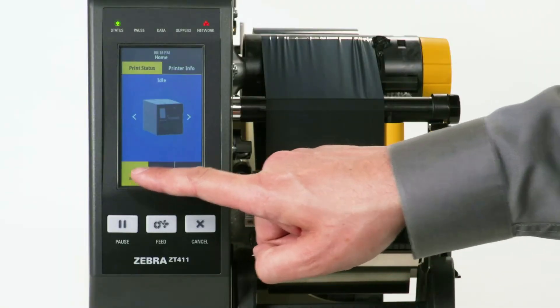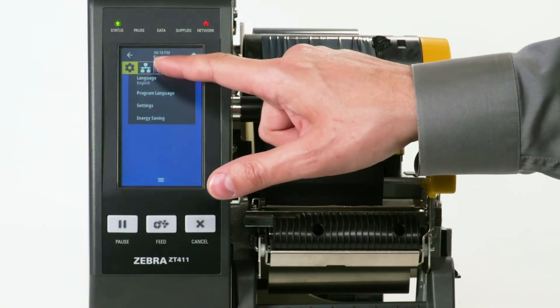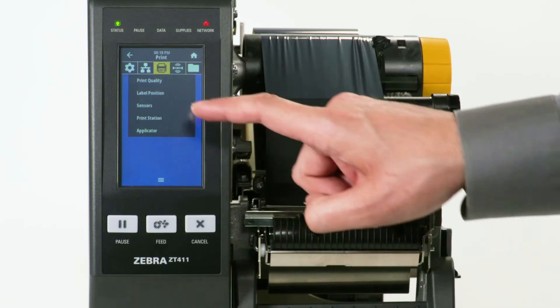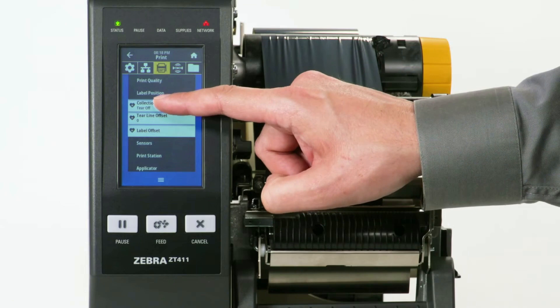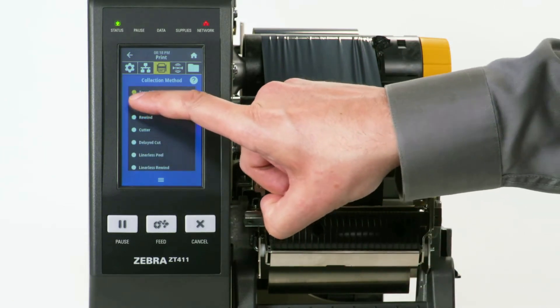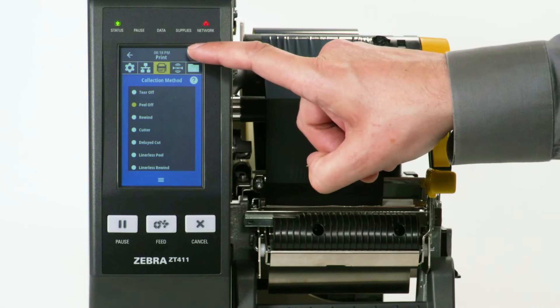Select Menu. Select Printer. Select Label Position. Select Collection Method. Select Peel Off. Select Home.